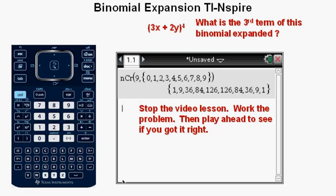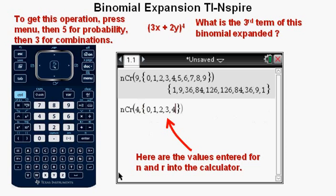To get this operation, press menu, then 5 for probability, then 3 for combination, then enter 4, then comma inside parentheses, then the digits 0, 1, 2, 3, and 4, each digit separated by a comma.